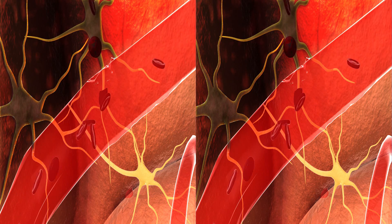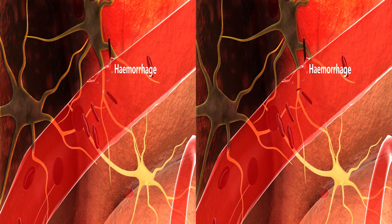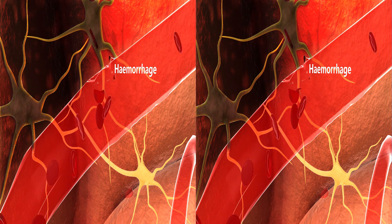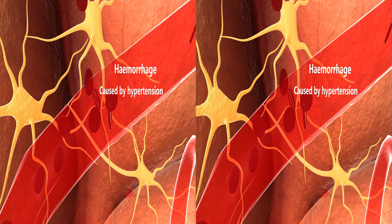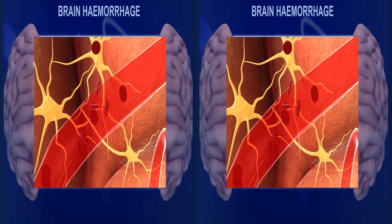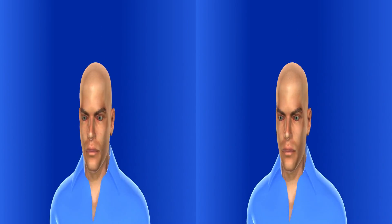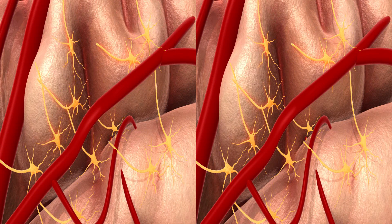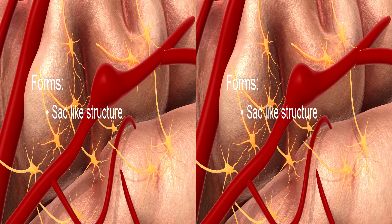Hemorrhage or bleeding of brain vessels may be caused by hypertension, which results in the bursting of blood vessels. It may also be due to an aneurysm, where the arterial wall bulges and forms a sac-like structure that ruptures later.